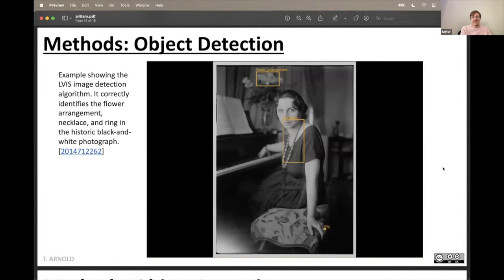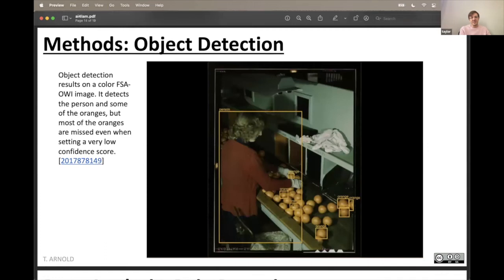For more esoteric images, object types like here, we're detecting a flower arrangement, a necklace and a ring detected. It has a very high precision. They're usually either correct or very close to correct. So it detects typewriters as being computers. It detects historic rotary phones as being cell phones, which are not right. But we understand what they're detecting. So it gets those mostly correct. The problem is that it fails to detect a lot of things. Here's an image of a woman sorting oranges. It detects four or five of the oranges down in the bottom, but the other oranges to me look just as much like an orange and it fails to detect them. And this is something we saw throughout the collections that it just failed to detect a lot of things that it should have been able to find. But when it detected them, it worked really well.